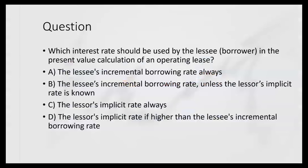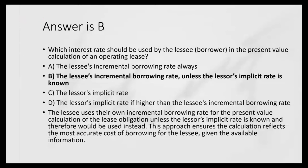Practice question: which interest rate should be used by the lessee in the present value calculation of an operating lease? The answer is B — the lessee's incremental borrowing rate, unless the lessor's implicit rate is known. Option A ('always incremental') is wrong; C ('always implicit') is wrong because if it's unknown, the lessee can't use it; D (implicit only if higher) is also wrong. This approach ensures the calculation reflects the most accurate cost of borrowing given available information.